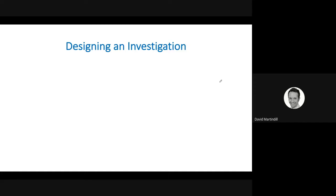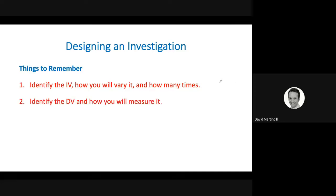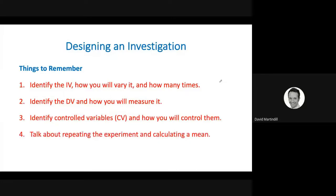If you're asked to design an investigation, you should remember a few things too. Make sure you identify the thing that you're varying, the independent variable. But don't just identify it. Tell the examiners how you will vary this and how many times you will vary it. Identify the dependent variable and how you will measure that. And also how you will keep them constant. Talk about repeating the experiment and from that repeated data calculating a mean value. This increases reliability.